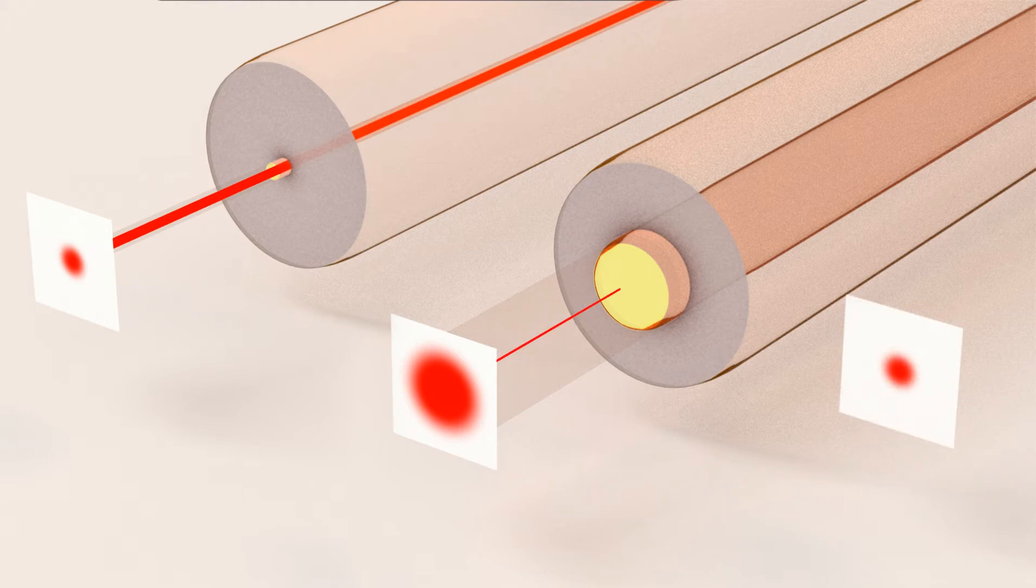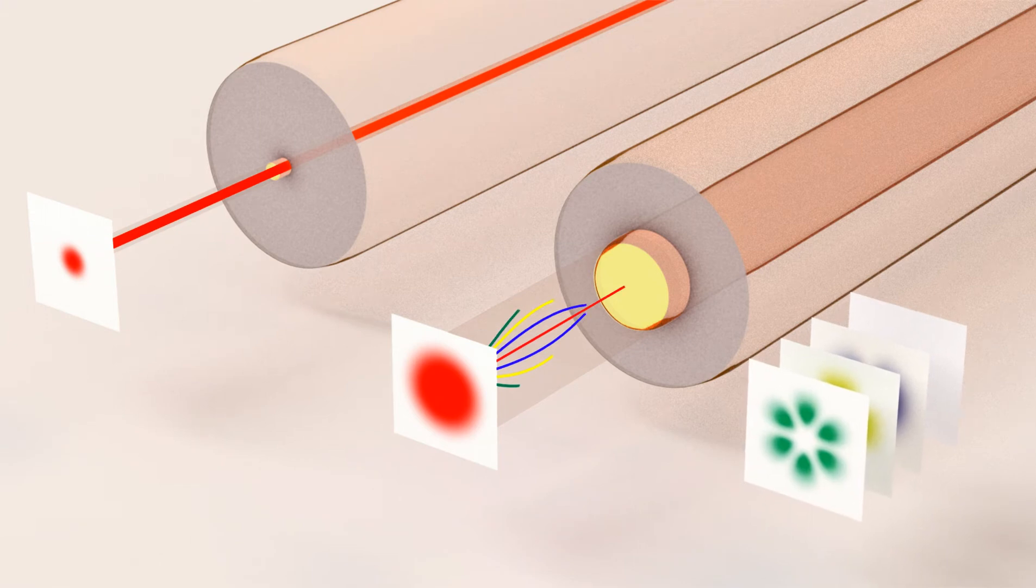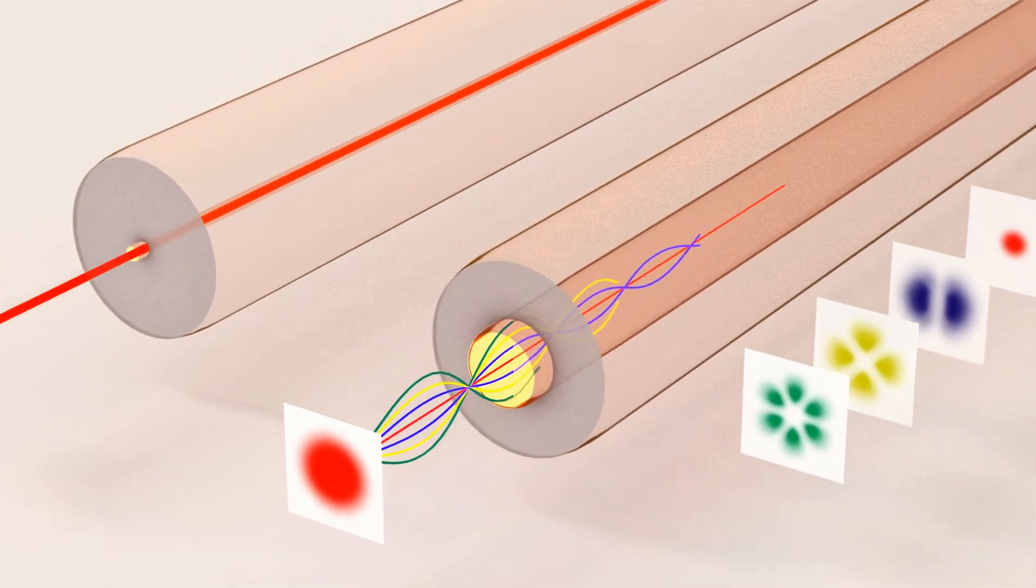On the contrary, core of multi-mode fibers is larger, thus light can propagate in several paths simultaneously. These paths have different intensity profiles and are called modes.